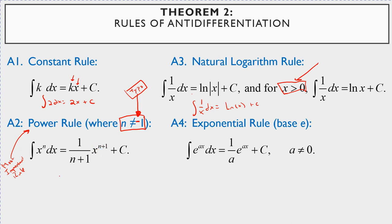For example, suppose you have the integral of x to the fifth power dx. Here n equals 5, so you get 1 over (5 plus 1) times x to the (5 plus 1) plus c, which simplifies to 1 sixth x to the sixth plus c. If you take the derivative of this, you get back to x to the fifth power.